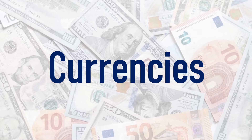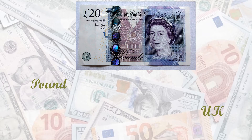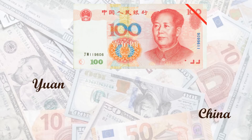Now we will learn about currencies of different countries. This is the currency of UK. Match this currency with UK — pound. Pound is the currency of UK. Next currency is Yuan. Yuan is the currency of China. You have to match the Yuan with China.